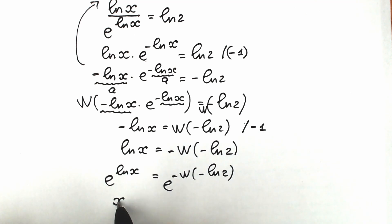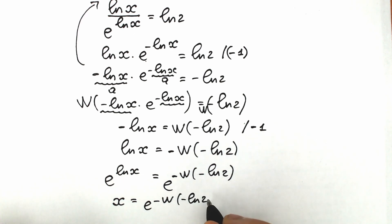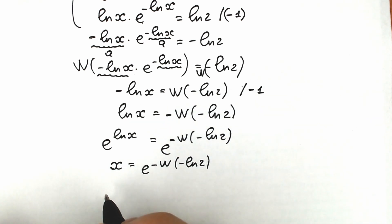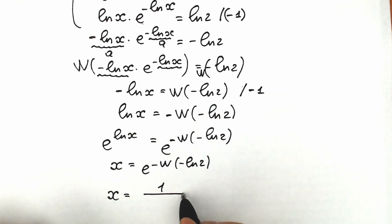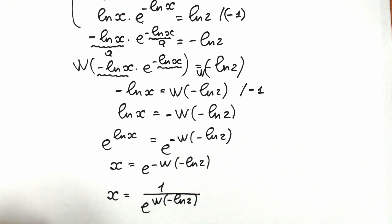So we have x equal to e to the power minus Lambert W of minus natural log 2. This minus can be moved to the denominator, so our final answer is x equal to 1 over e to the power Lambert W of minus natural log 2.